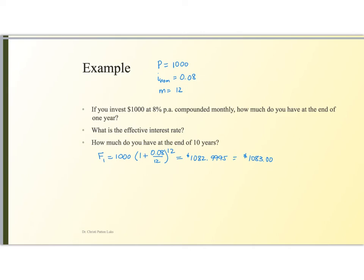Then what's the effective interest rate? Well, the effective interest rate is simply (1 plus 0.08 over 12) to the 12th power minus 1, which is going to be 8.3%.